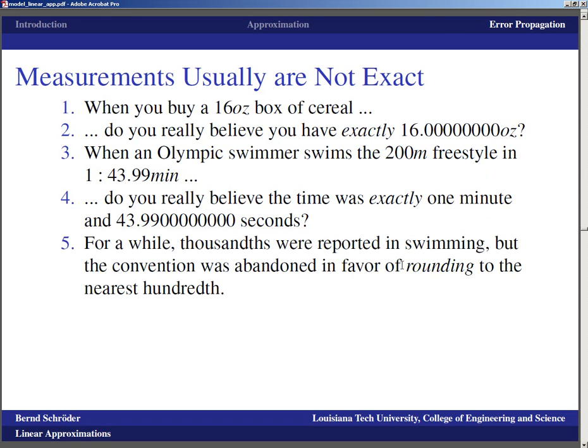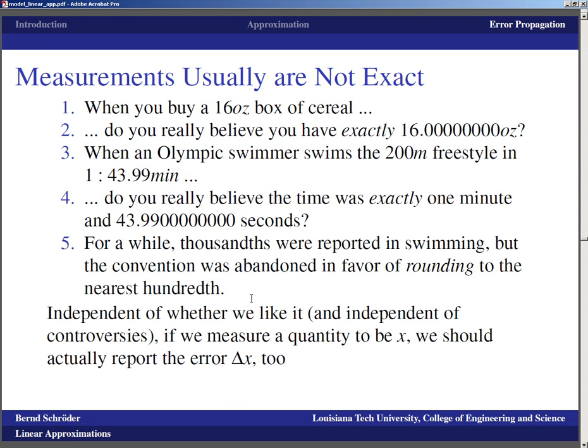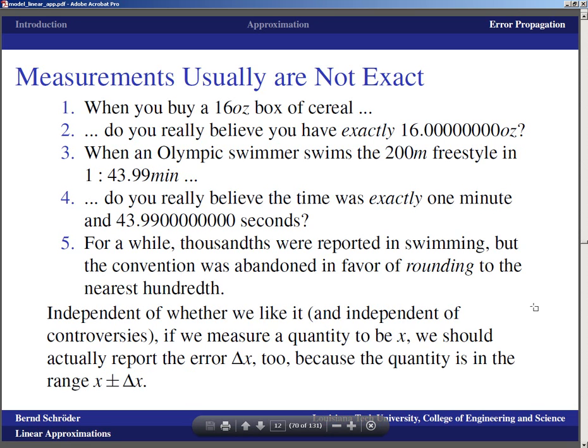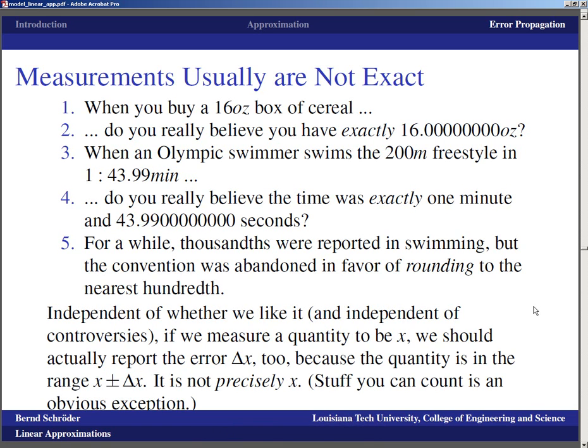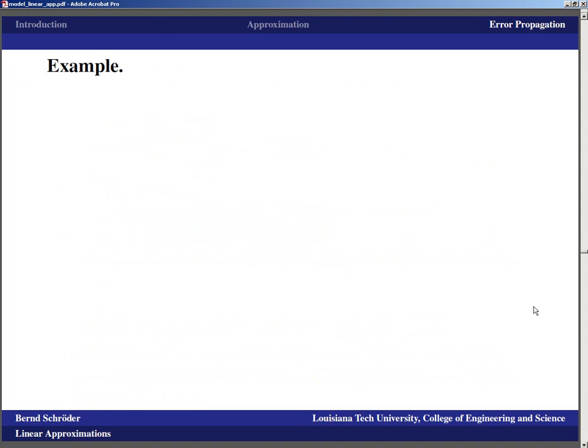In Olympic swimming, for a while the records were kept down to the one-thousandth place, I think that was somewhere in the seventies or eighties, and ultimately the governing body decided they're only going to record hundredths. Of course that means that sometimes two swimmers are tied and photographs have to be consulted. There is a limitation to the exactness of measurements. If we measure a quantity to be x, we should actually report the error delta x too. And typically the way you report the quantity then is x plus minus delta x.